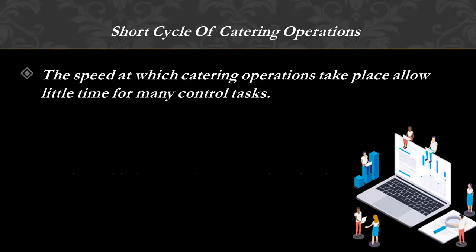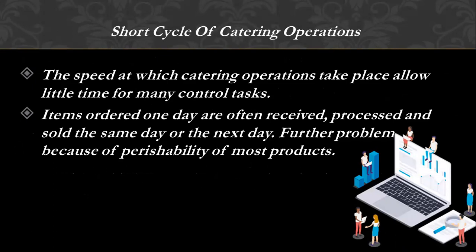Short cycle of catering operations: the speed at which catering operations take place allows little time for many control tasks, because in a busy restaurant everything is happening really fast. Items ordered one day are often received, processed, and sold the next day. There is a further problem due to the perishability of most products — you may order something today and receive it after two days, and then process and store or sell it. Throughout this entire process you have to keep in mind the perishability of that particular product, so storage must be done properly.